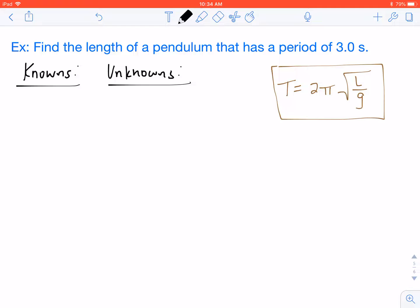So the first thing that we need to do with any physics problem is list our knowns and unknowns. So in this problem, they only give us one known value, which is the period being 3 seconds. So we know that capital T equals 3 seconds. Based on our equation, though, since the equation has gravity in it, we know that gravity on Earth is a constant acceleration, and that is 9.8 meters per second squared.